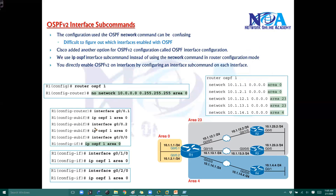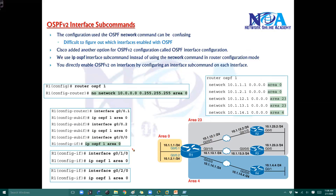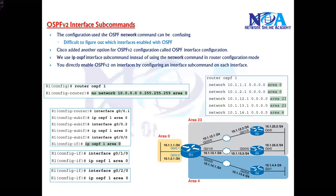Likewise here, you can see these two interfaces we have advertised in area 0, and then the g0/0 interface — g0/0/0 — this interface has to be in area 23, I think, as per this topology. So this is just an example to understand, not exactly the same design topology here.